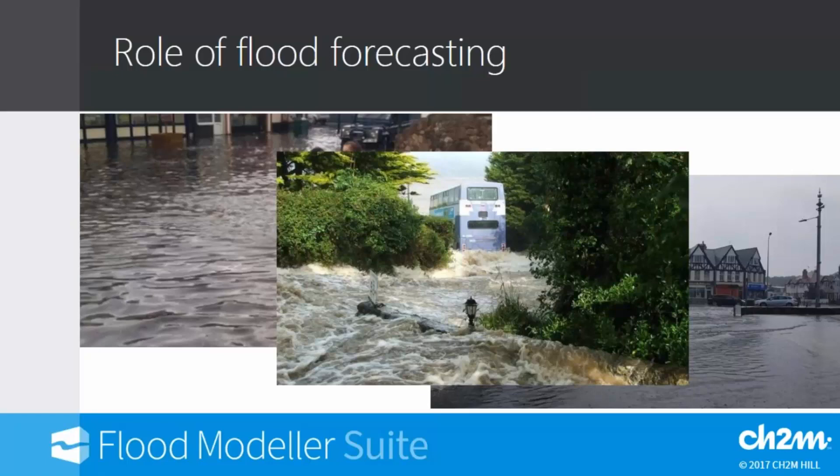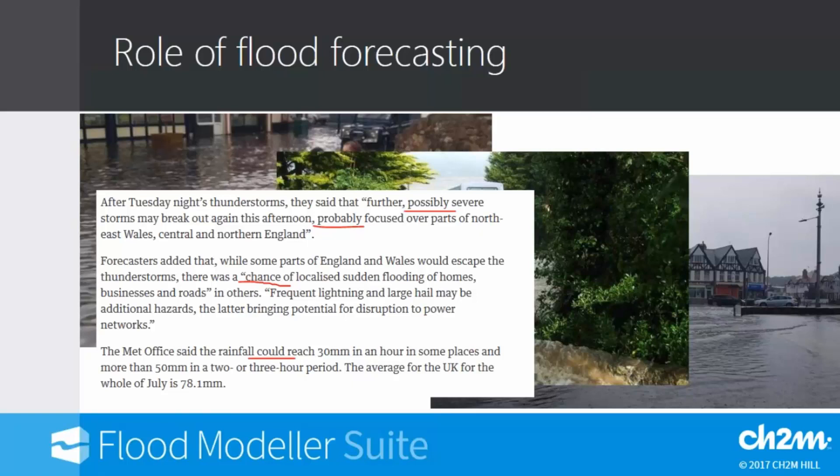These pictures come from the recent flooding last week in Wales and Cornwall. We have this bus having a bit of difficulty going down this road, and with some advanced warning we can potentially advise that driver to stay at home that day or take a different route. These are the kinds of decisions that are informed by our flood forecasting models.